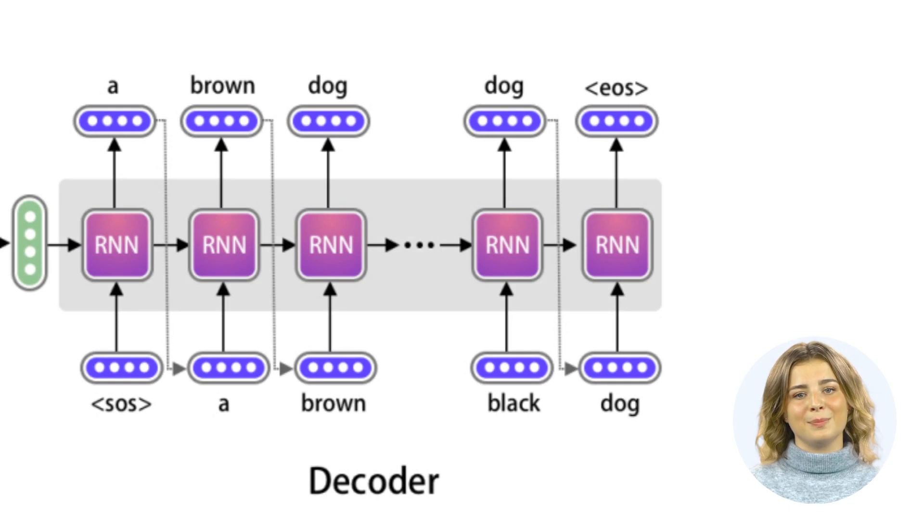However, there's a bit of a twist here. During inference, that is, when we're using the model to make predictions, as opposed to training, we don't have access to the correct output tokens. So instead, the decoder uses its own previous predictions as input for the next time step. This process is repeated until the decoder generates a special token signifying the end of the sequence.